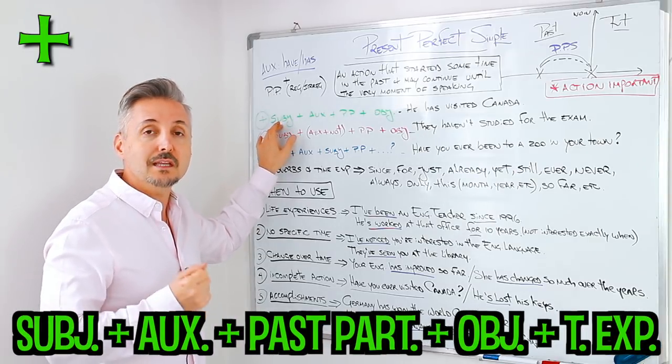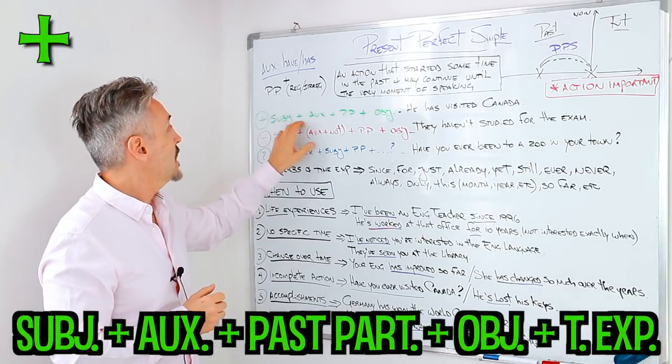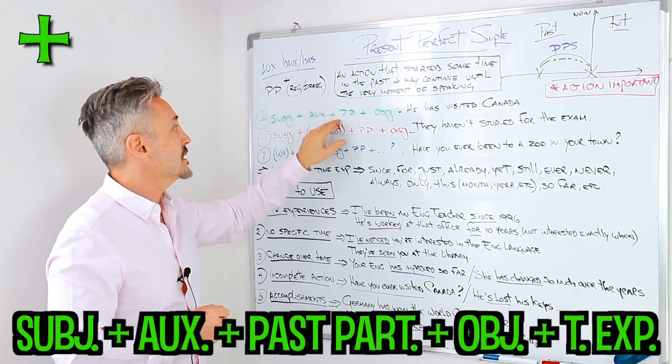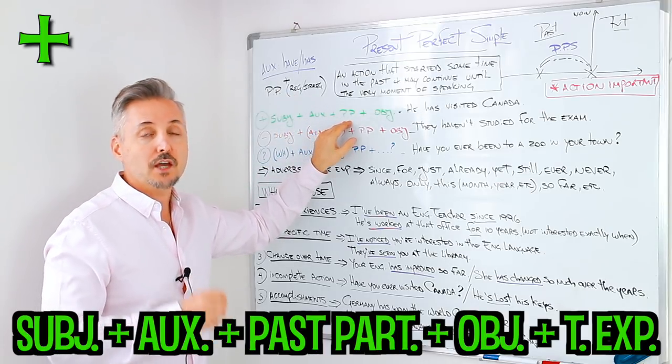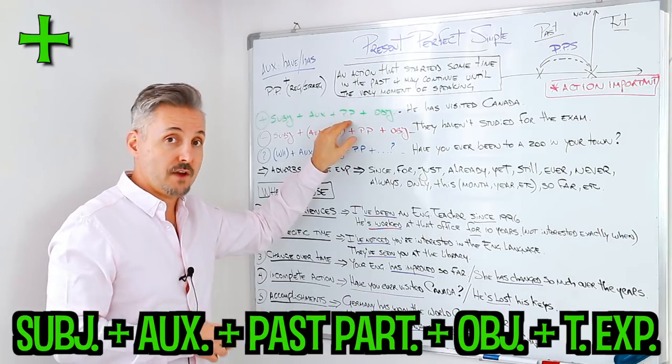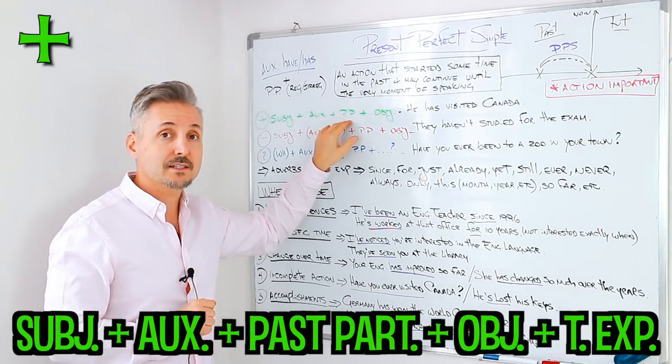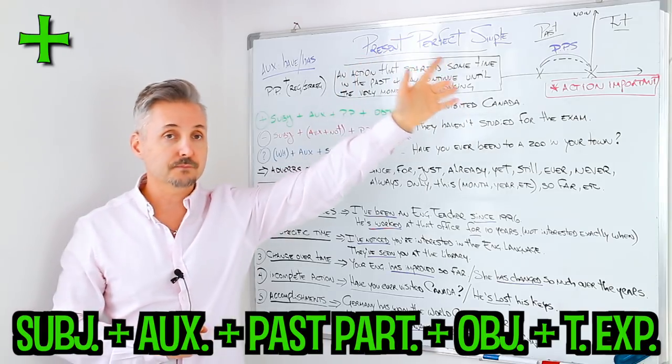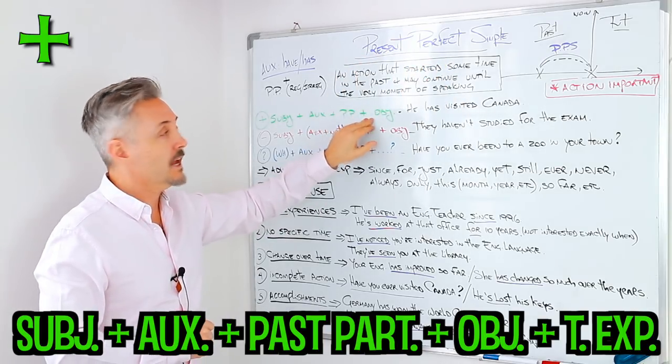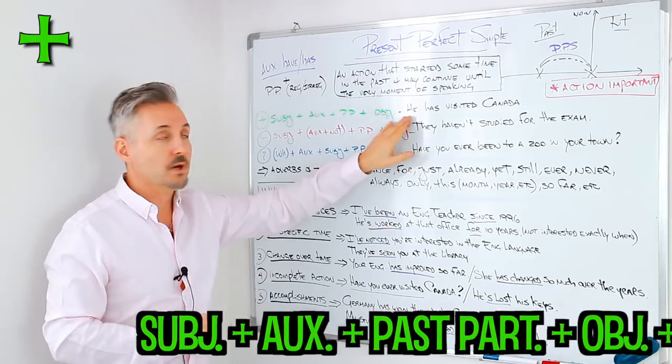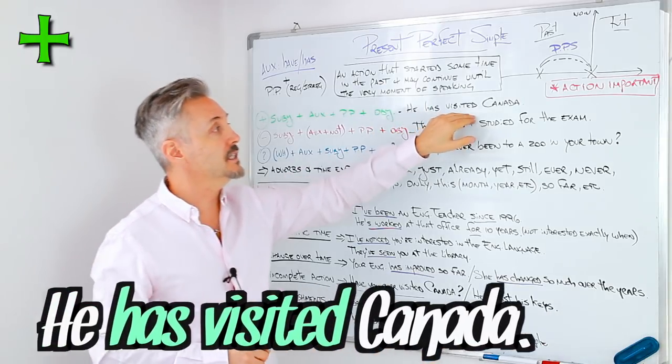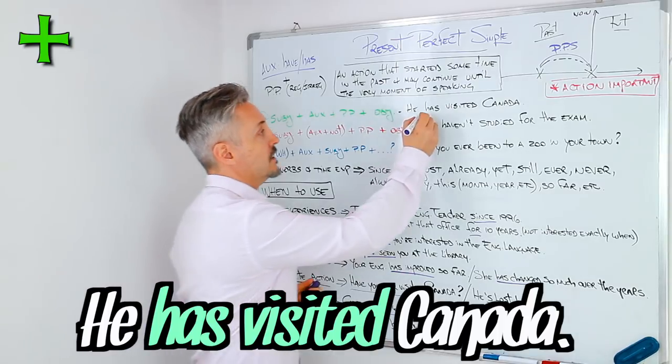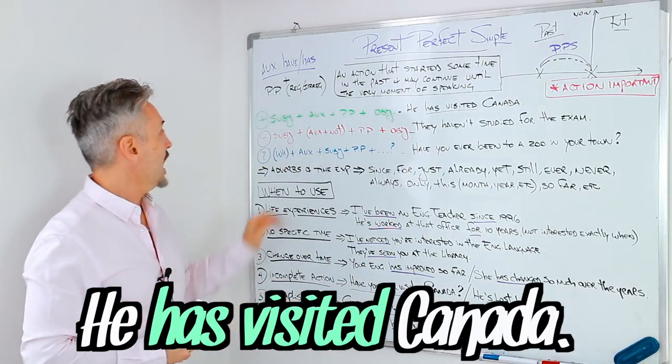For a positive sentence, we need the subject plus the auxiliary, so have or has, plus the past participle. It could be regular or irregular. If you want to watch a lesson on regular or irregular verbs, you may click here. And then we need the object. So an example: He has visited Canada. Right there.